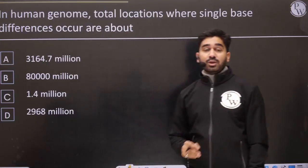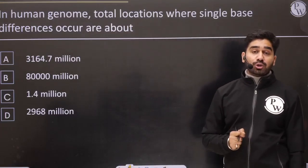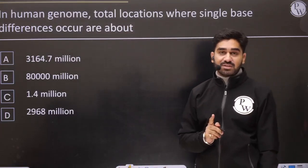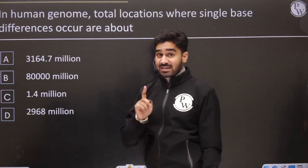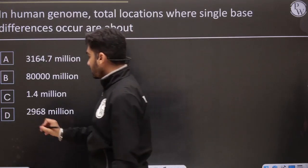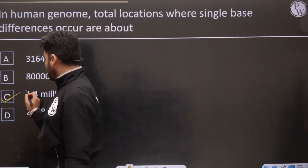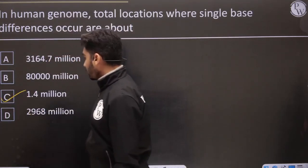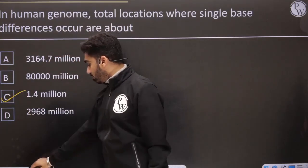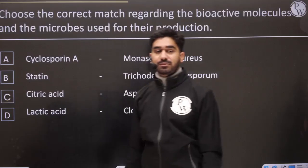In the human genome, total locations where single base differences occur — these are SNPs. That number was 1.4 million.